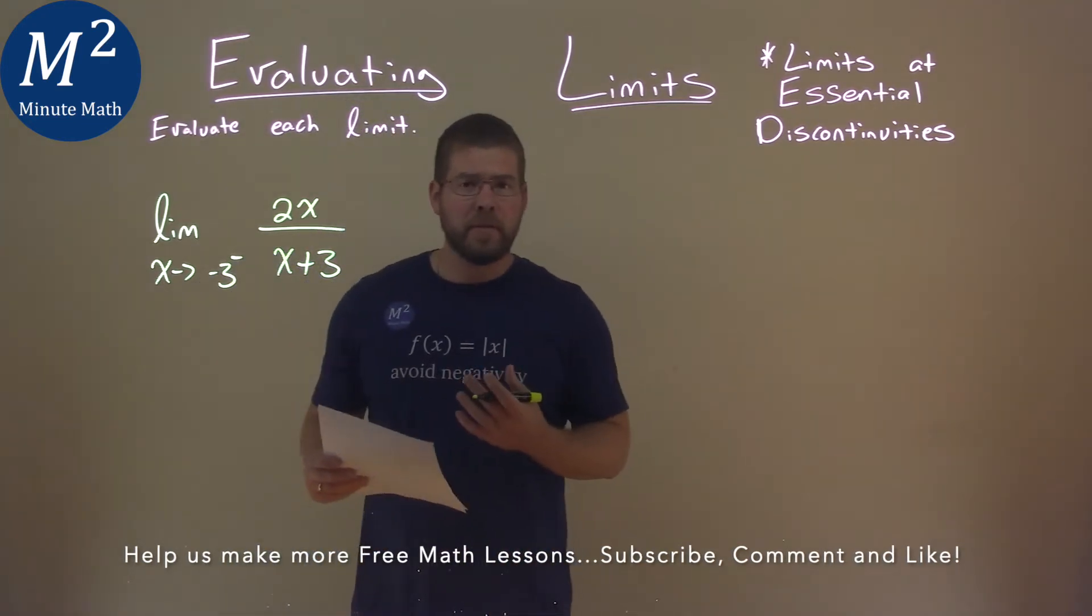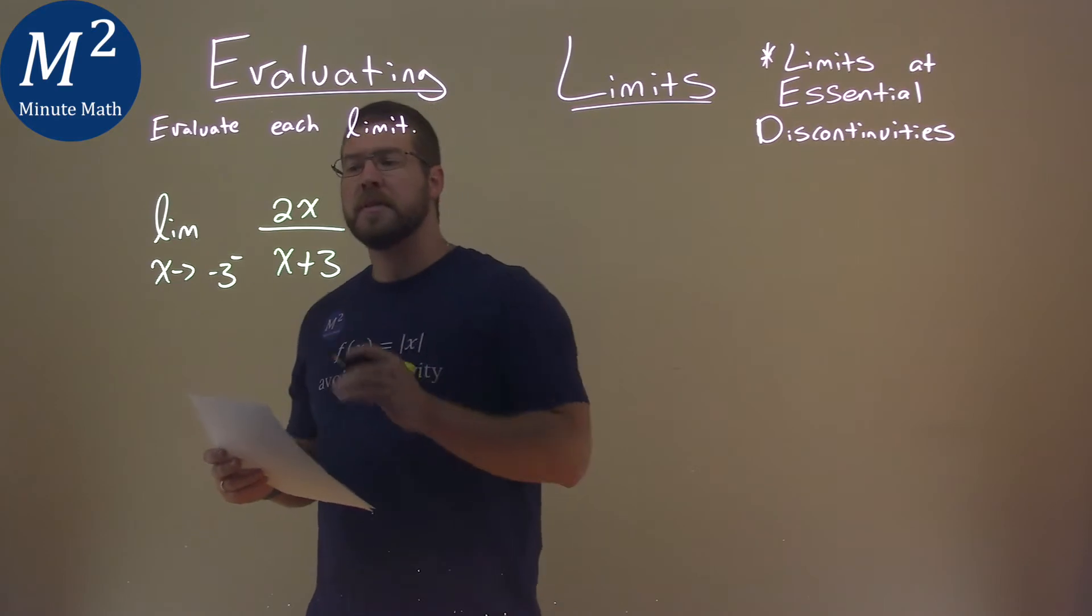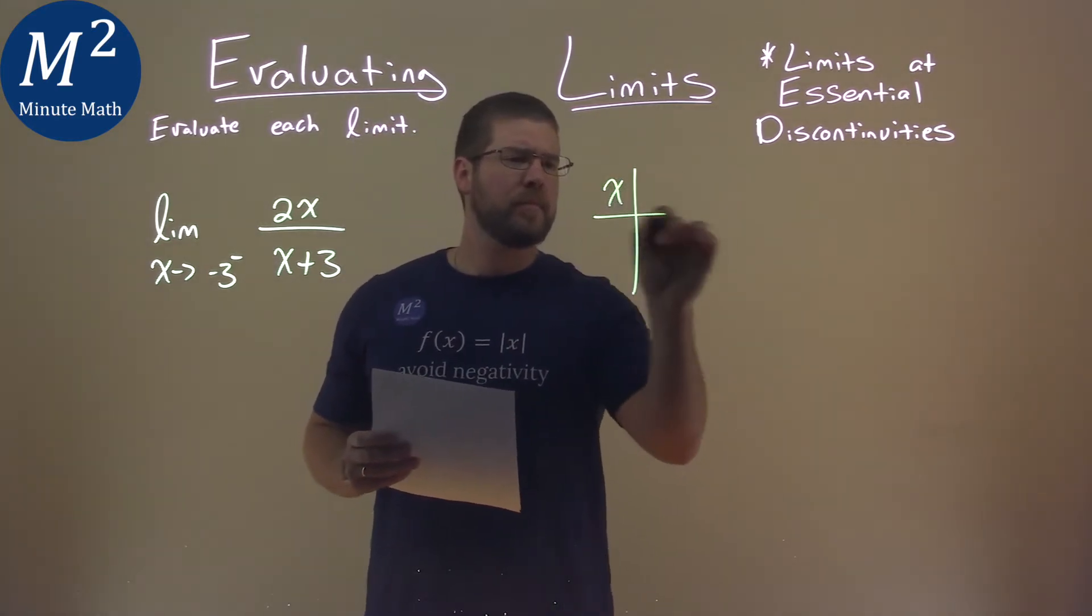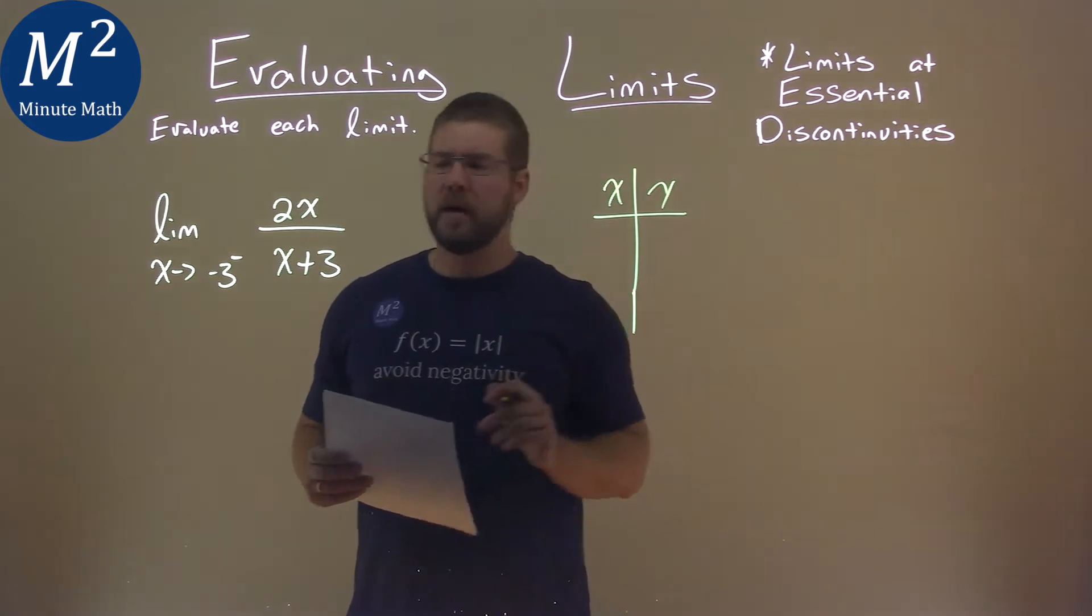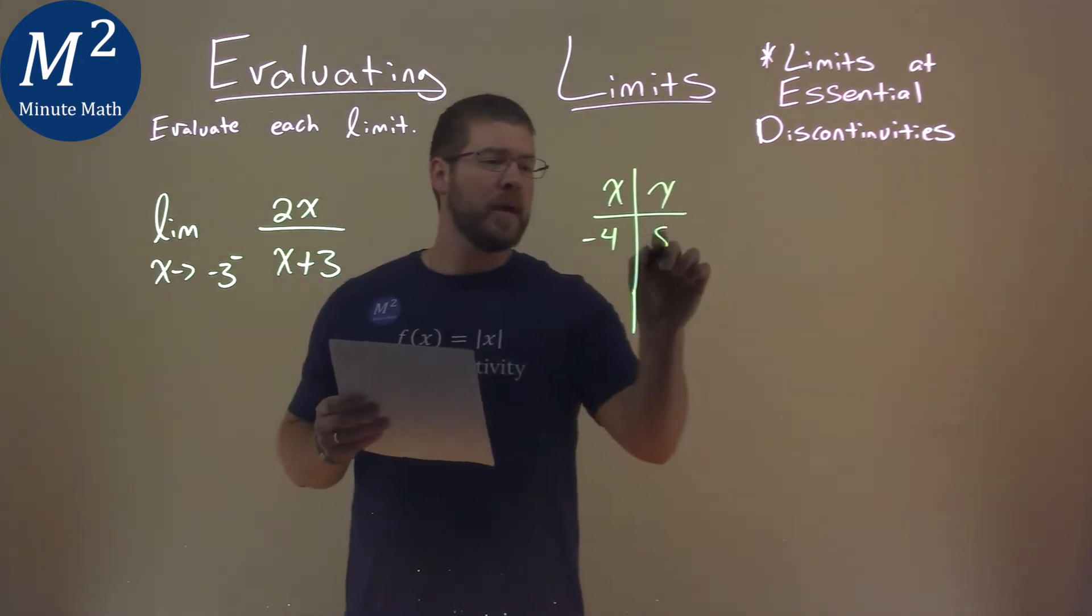There are a few ways to go about this. We can use a table and put in some values that approach negative 3 from the left. So we have x over y. If we put negative 4 in, we would get 8.